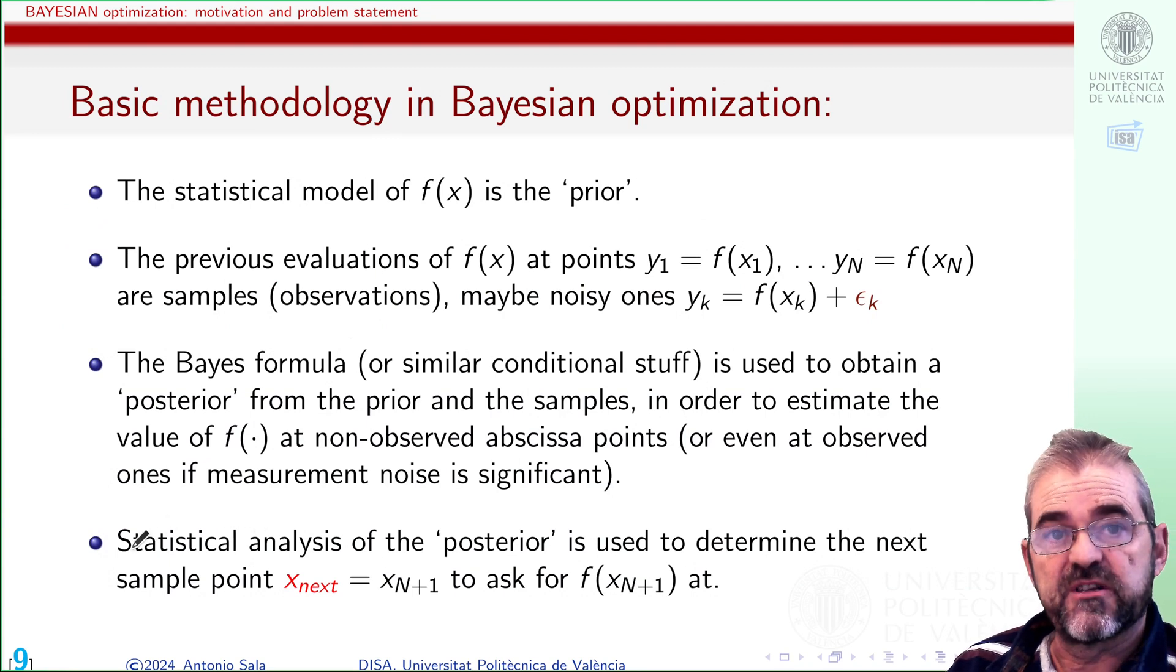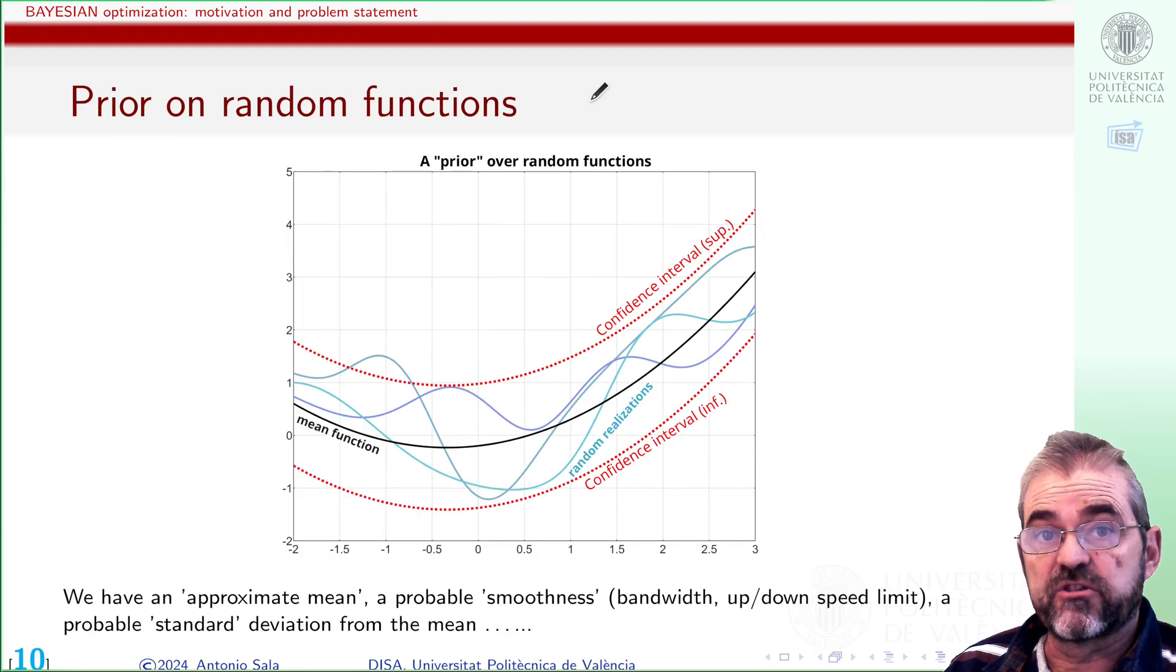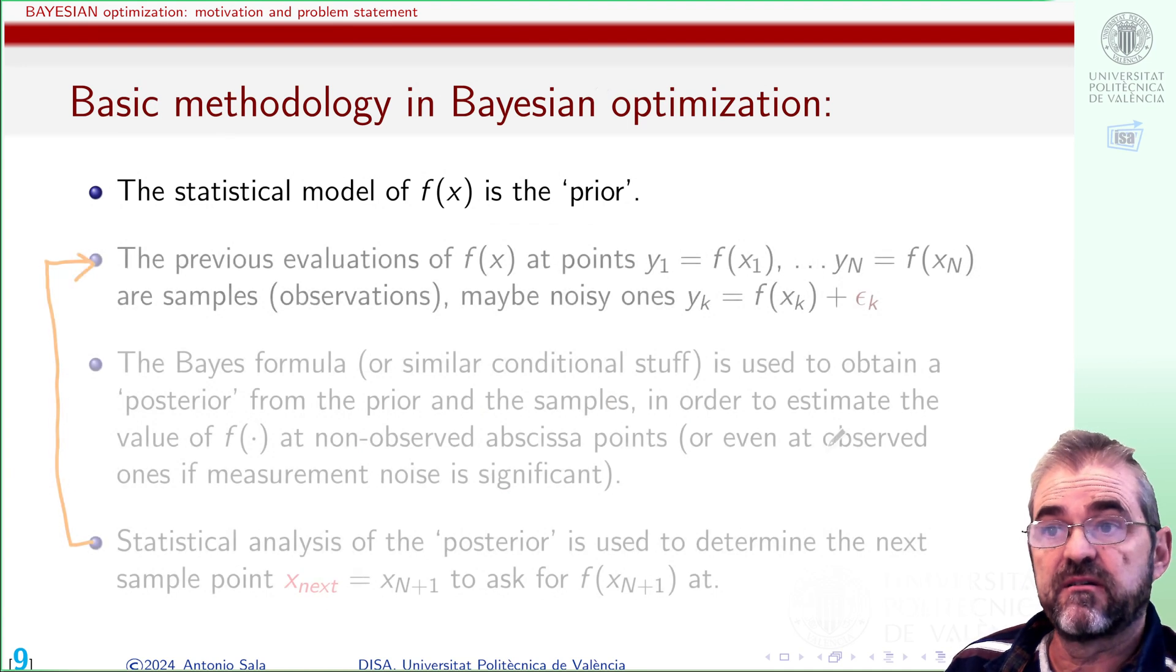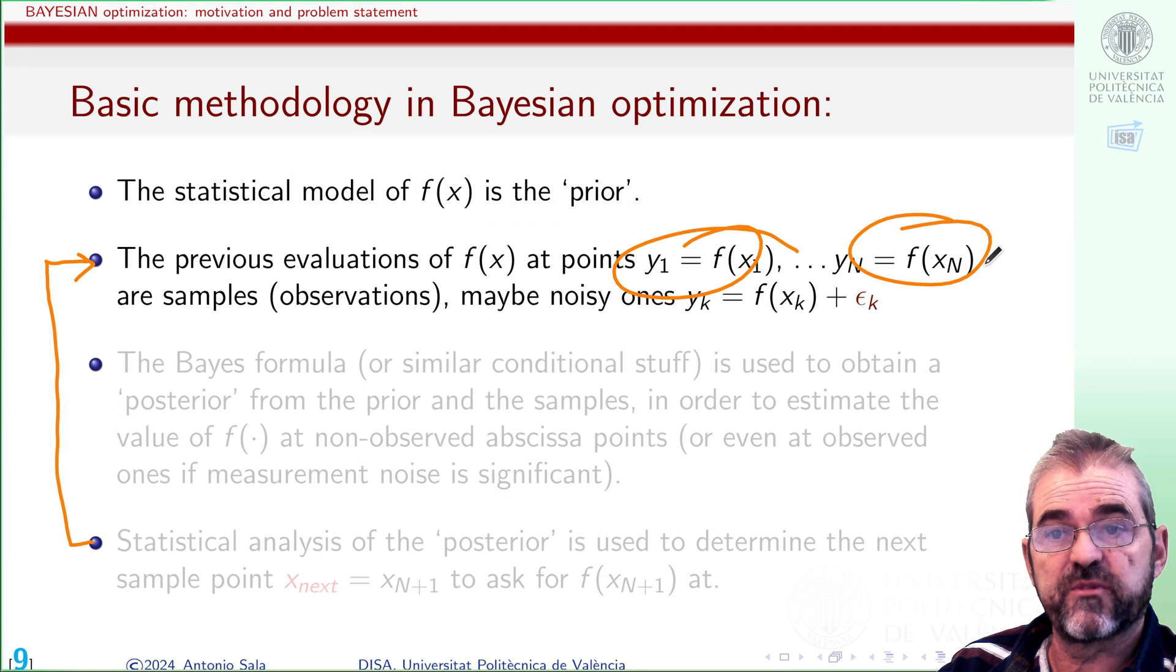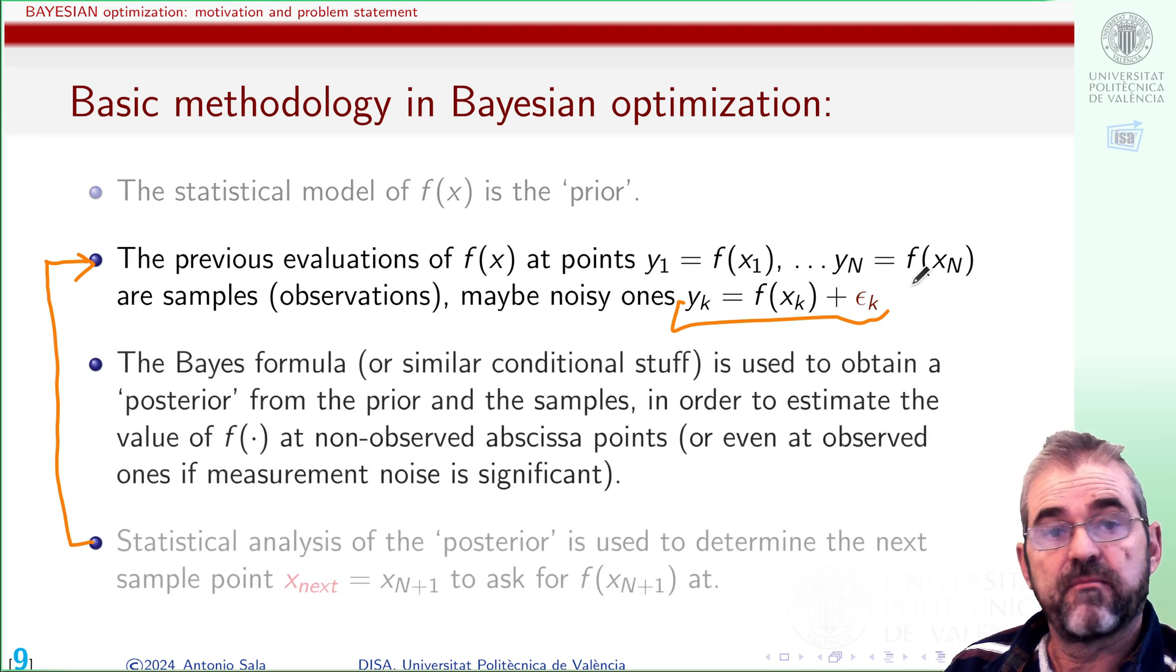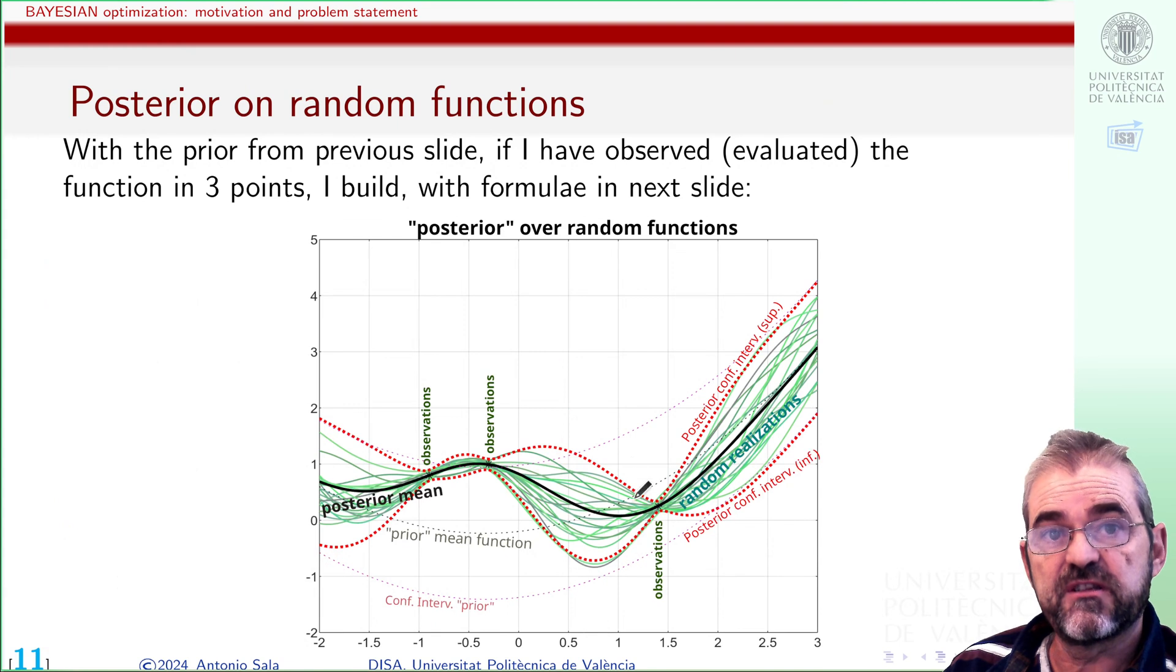And in fact Bayesian optimization techniques mostly follow this basic methodology in which the first step is building a prior encoding some mean function maybe from a deterministic model and some uncertainty bounds and some covariance to define smoothness and correlation as a function of distance. And once I have my prior then I sample at some points getting measurements of the function values in some cases with some measurement noise and so I use some Bayes formula or in the case of Gaussian process the conditional posterior Gaussian distribution whatever we'll review it in a second.